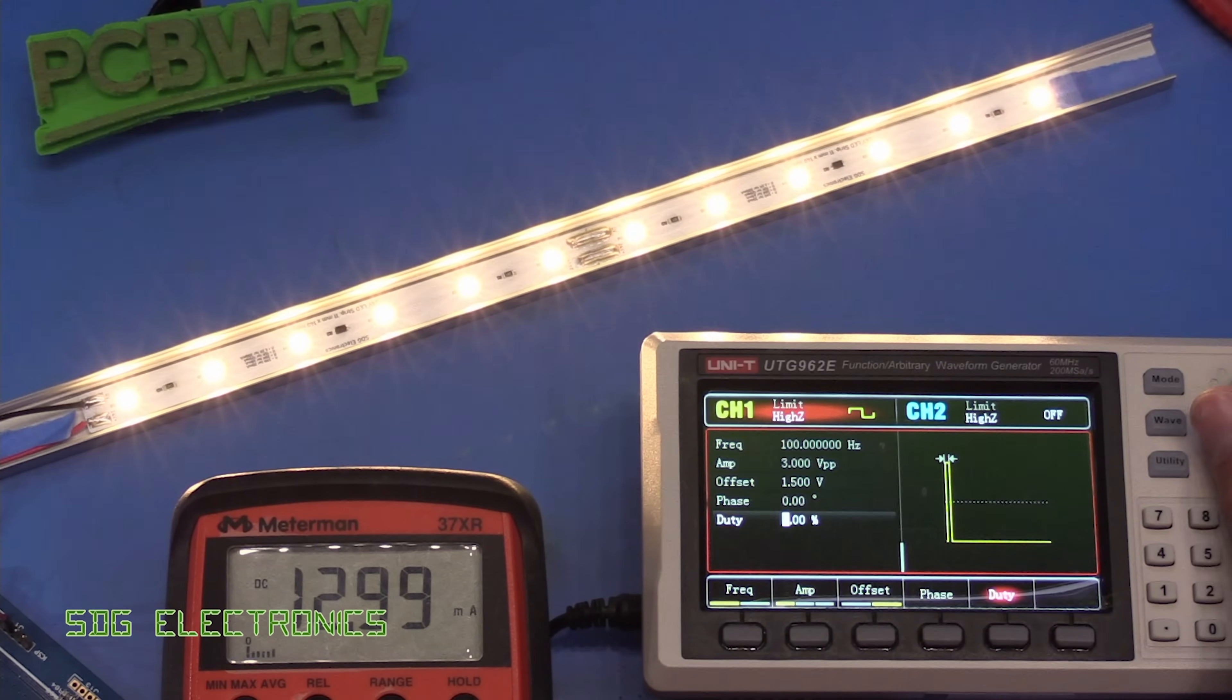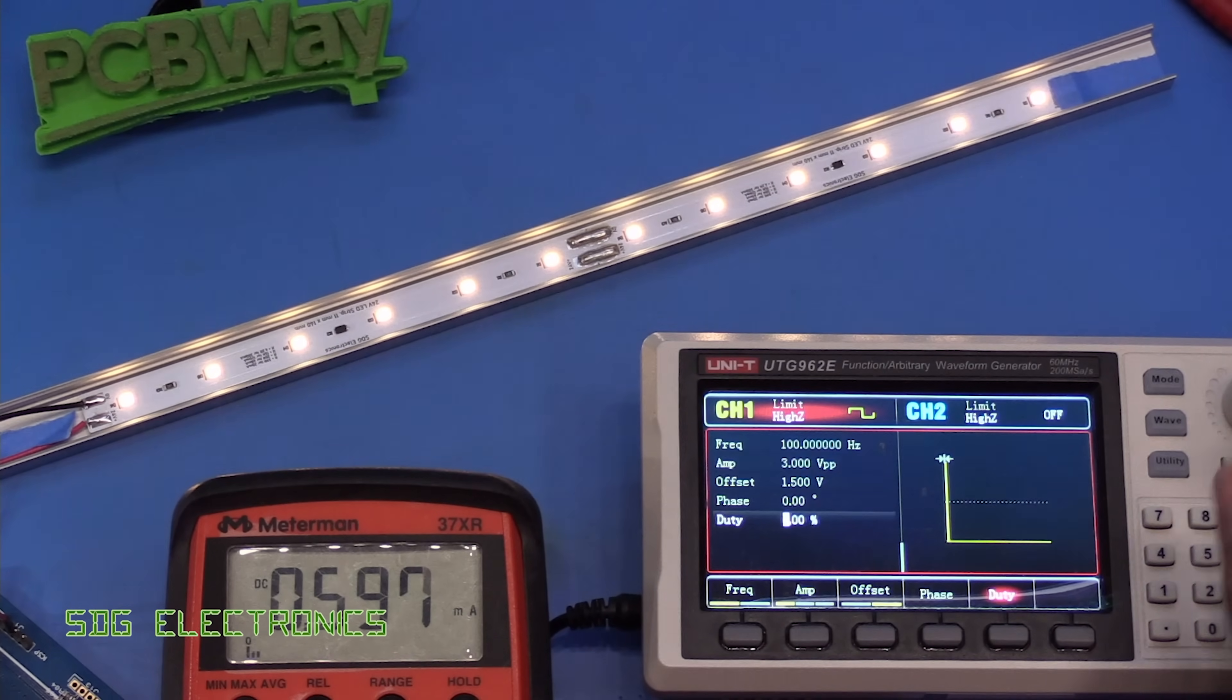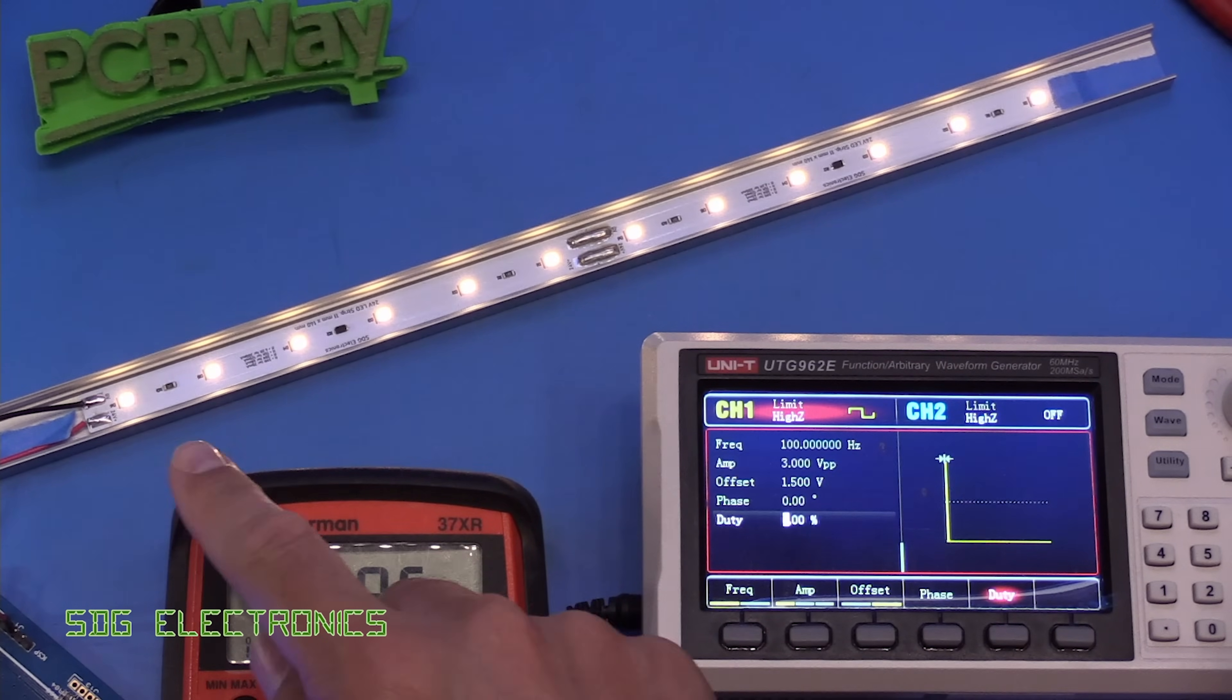and if we decrease it down to one percent which is here technically we should be reading three milliamps and we're down at 0.6 but the LEDs are still illuminated so basically what that says is that although we've got non-linear dimming we have got full control of the brightness of the LED right until the point where they turn off